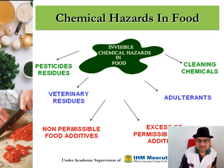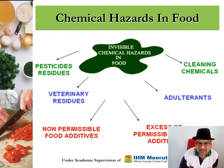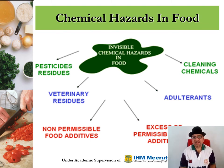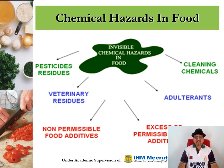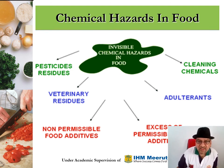These are the chemical hazards in food: pesticides and residues (invisible), cleaning chemicals (invisible), veterinary residues (invisible), adulterants (visible — you should be on the lookout for any adulterants that may have been added to food), non-permissible food additives (read food labels carefully and determine if all additives are approved by the appropriate licensing authorities), and excessive permissible additives — more than permitted amounts added to your food.